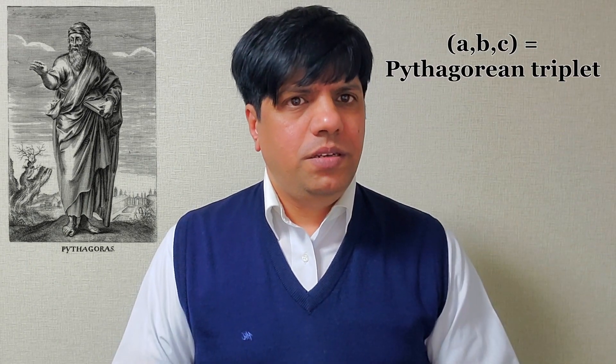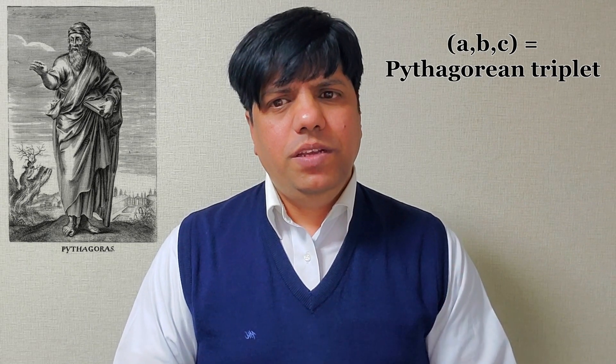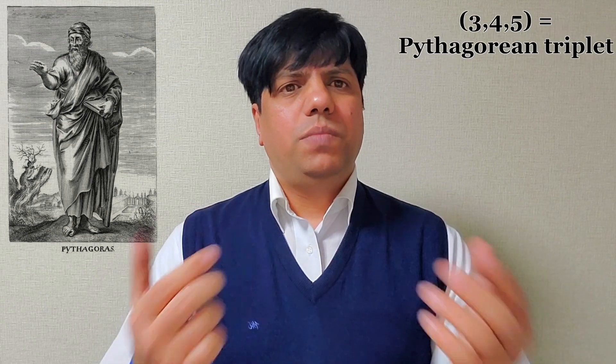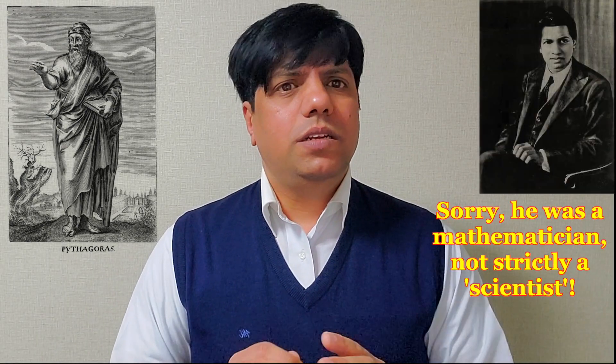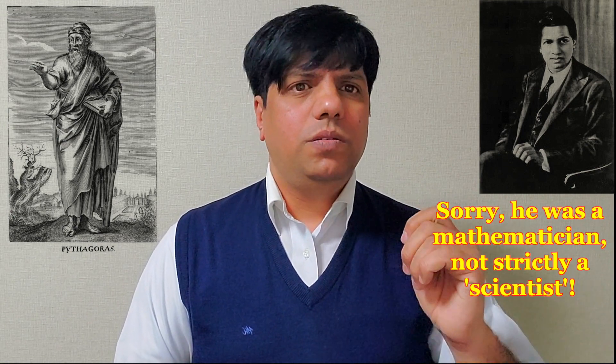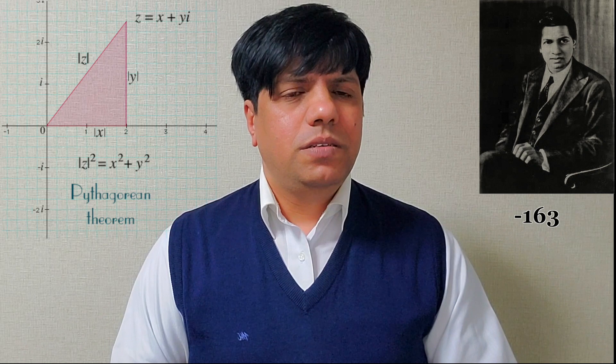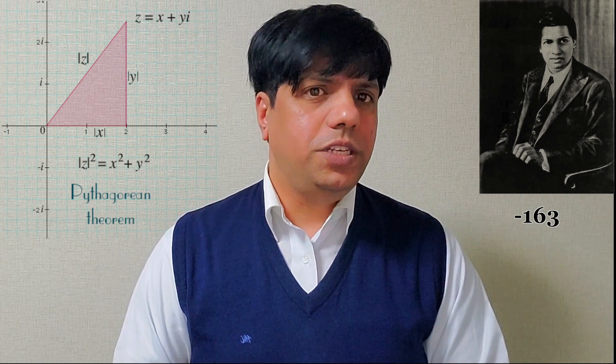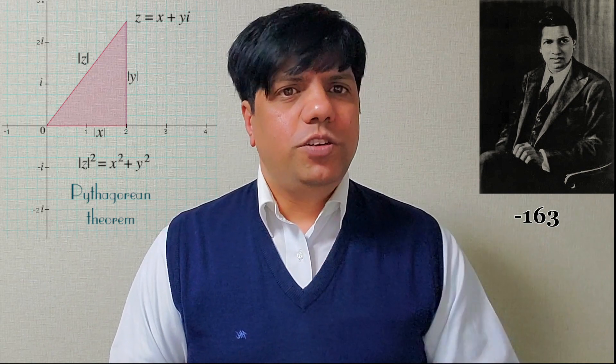So a, b, and c, these numbers are called Pythagorean triplets. For example, 3, 4, and 5. 3 squared plus 4 squared equals 5 squared. Now, 3 squared is 9, 4 squared is 16, and 9 plus 16 is 25, which is 5 squared. So 3, 4, and 5 are Pythagorean triplets. And by the way, great Indian scientist Ramanujan has done fantastic work on the Pythagorean triplets. The number minus 163 is an amazing number, but we'll talk about that later.